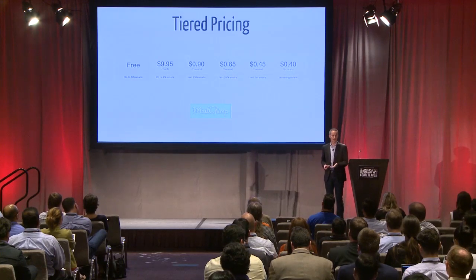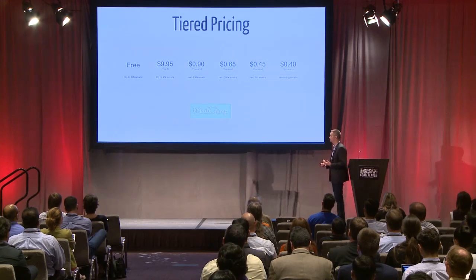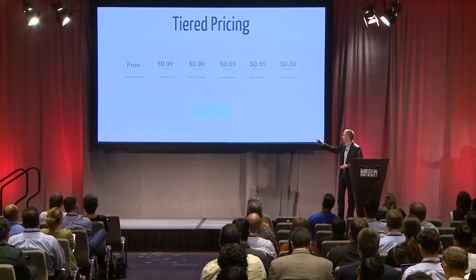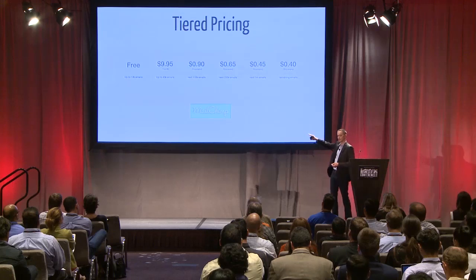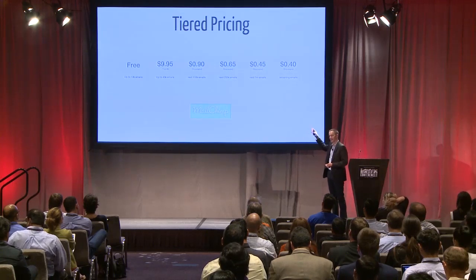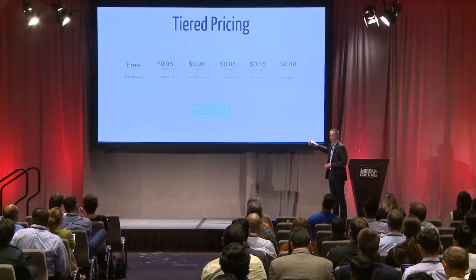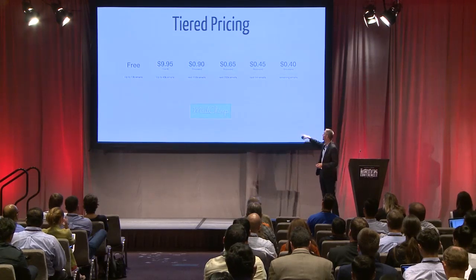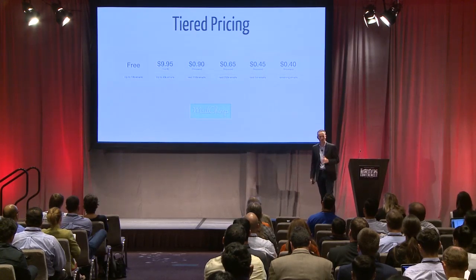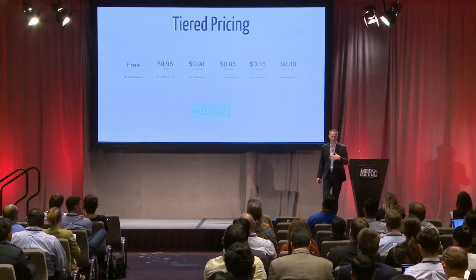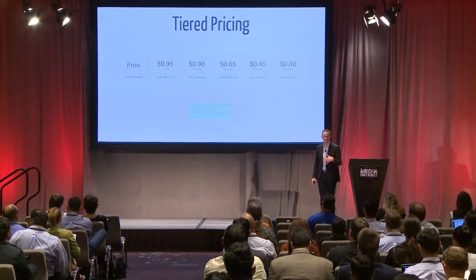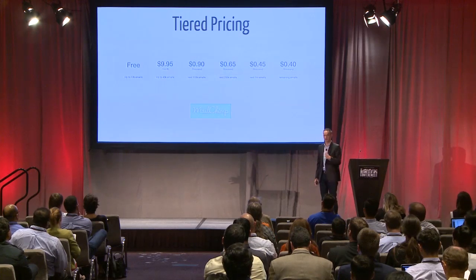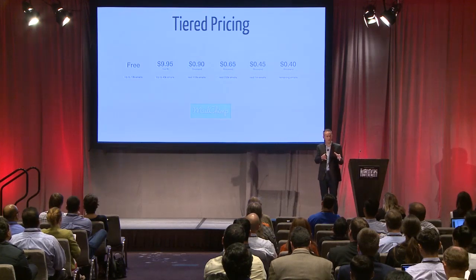Another paid model: tiered pricing — bulk pricing for APIs. Mailchimp's pricing page shows that you pay less as you send more emails per month. You can start at $9.95 and then go up to 40 cents an email once you go over a million emails a month. No shock there, but the API is reflecting the fundamental business model of Mailchimp.